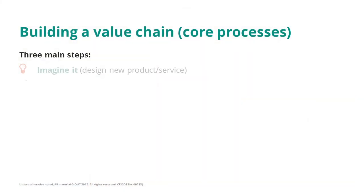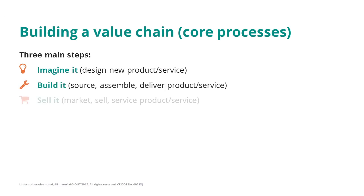When building a value chain specifically for core processes, we can think around three main steps: imagine it, build it, and sell it.